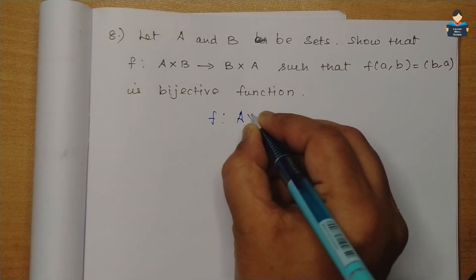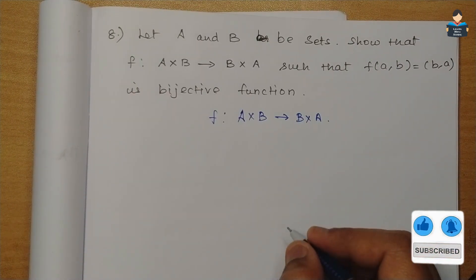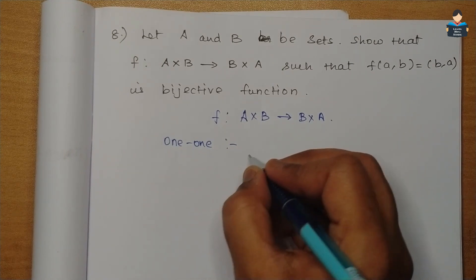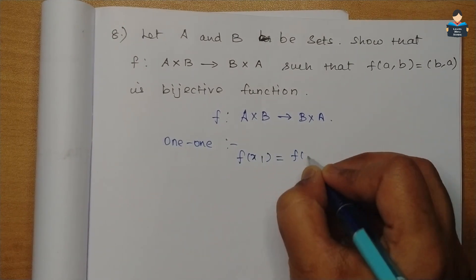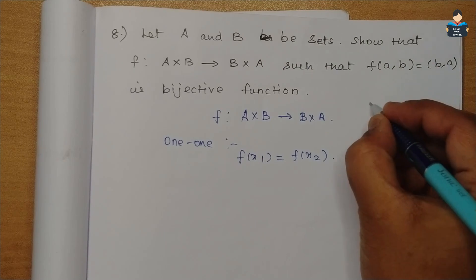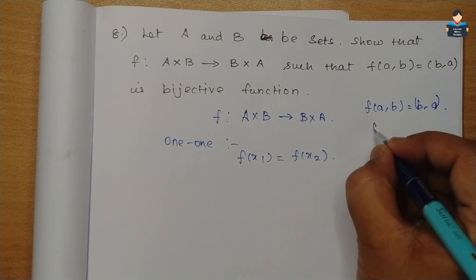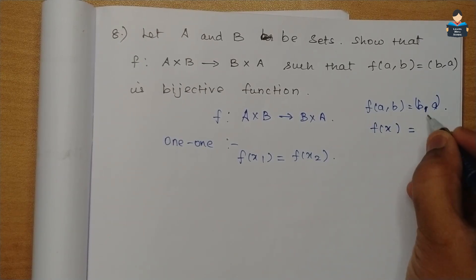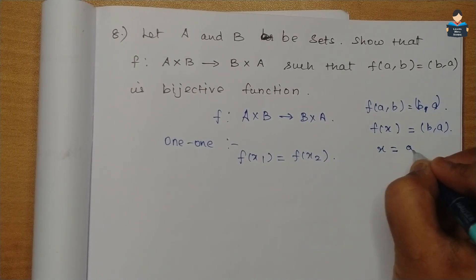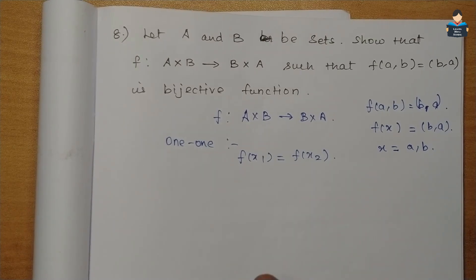So the function is f: A×B → B×A. To prove it is one-to-one, we start with: suppose f(x1) = f(x2). The function is defined as f(a, b) = (b, a), so x belongs to A×B. We take two variables x1 and x2.